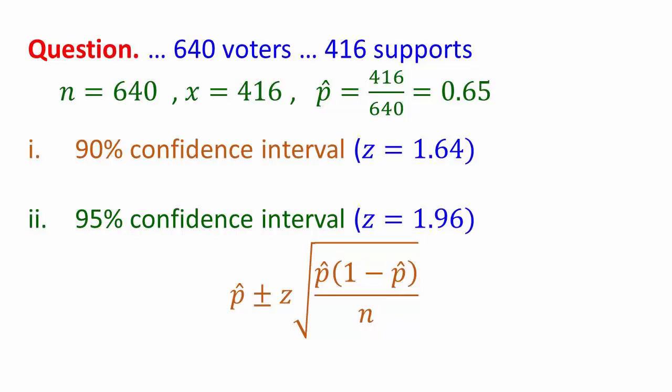Back to the question. We've got 640 voters and let's call supporters being a success. So the number of supporters is 416. P hat is just 416 over 640, which is 0.65. For a 90 percent confidence interval, we would use the value of z equal to 1.64, substitute the values into the formula, and we would have a confidence interval. For 95 percent, I'd do exactly the same except for z I would have 1.96.